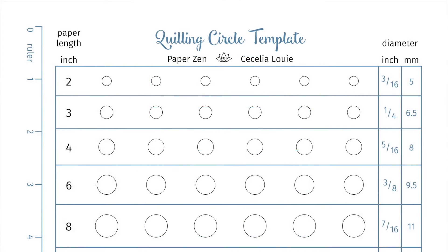What I love best is that I've listed the length of quilling strip needed to fill the circle, plus a handy ruler down the side. I also have the diameter in both inches and millimeter on the right.